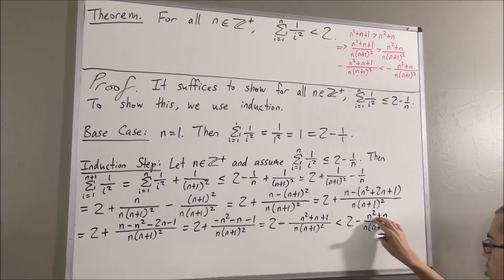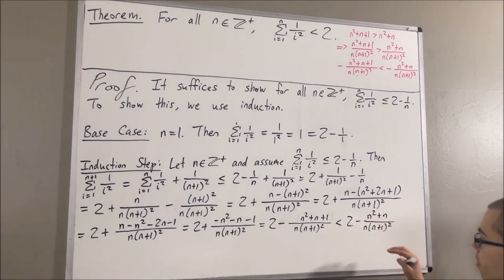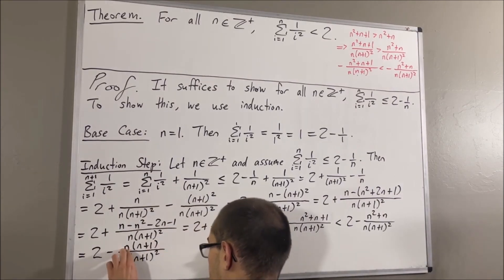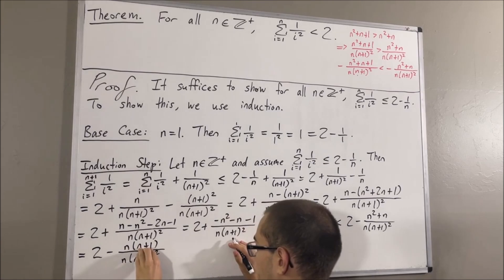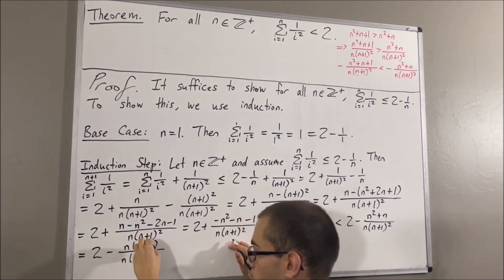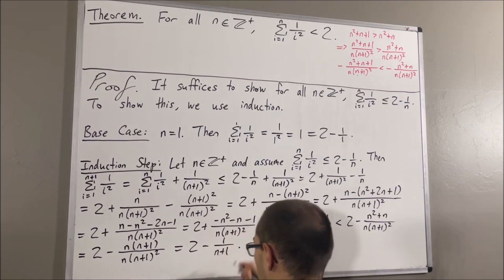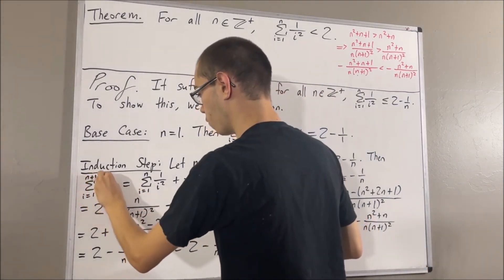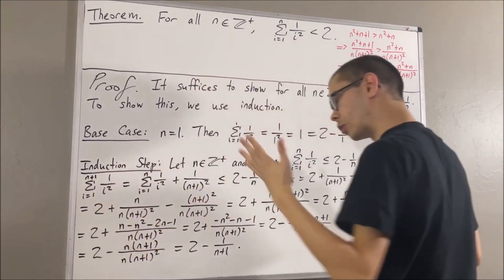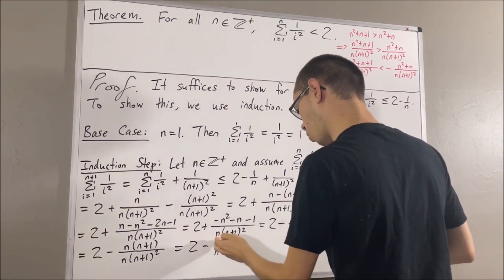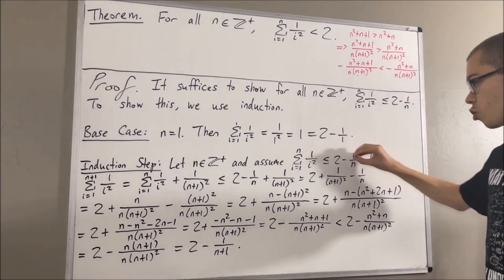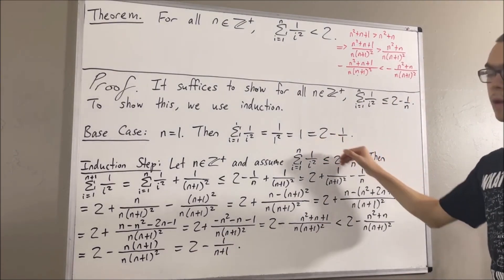Now, in the numerator, we can factor out an n. We see that the n's will cancel out and the (n+1)'s will cancel out, and that will leave us with 1 over (n+1). So we have shown that the sum from i equals 1 to n plus 1 of 1 over i squared is less than or equal to 2 minus 1 over (n+1). In other words, we have shown that this is true where instead of n, we have n plus 1.